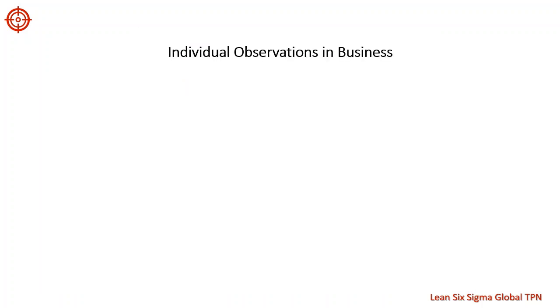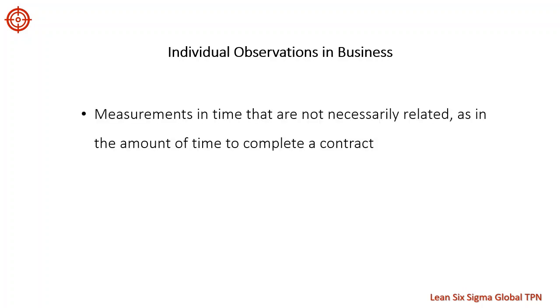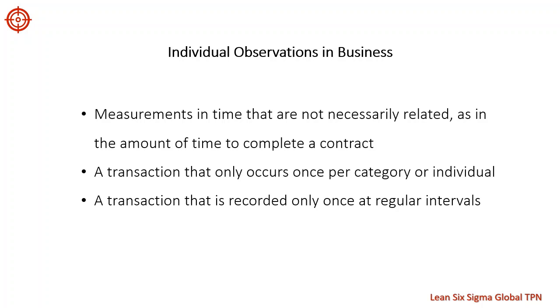Control charts for individual observations are also used for business and transactional applications. The time it takes to complete a contract or answer a question depends on the type of contract or question, so we would generate separate control charts by category. The number of people making a reservation at a restaurant per day or the amount of money collected for a charity drive each year are also examples where a subgroup size of one is most appropriate.